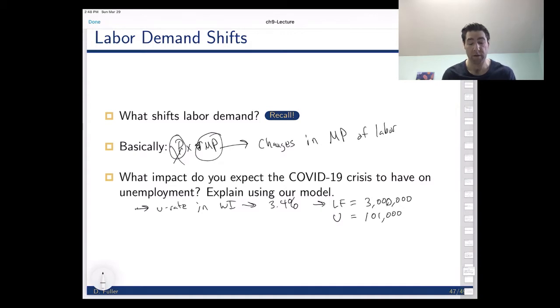In the first nine days of this crisis, before even the safer at home edict by Governor Evers, there was an increase in unemployment claims, unemployment insurance benefit claims, of a hundred thousand and maybe a little bit more in nine days.